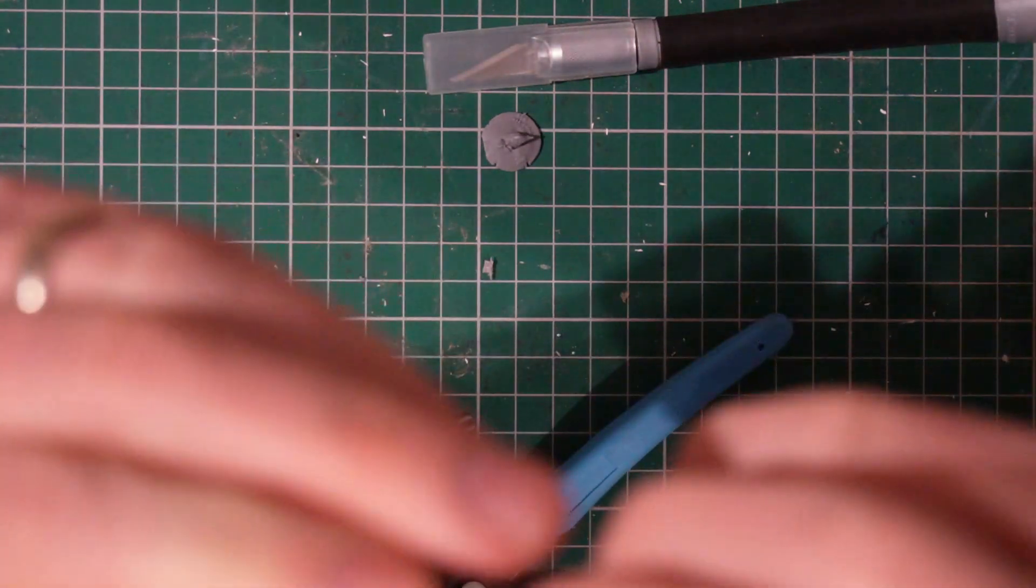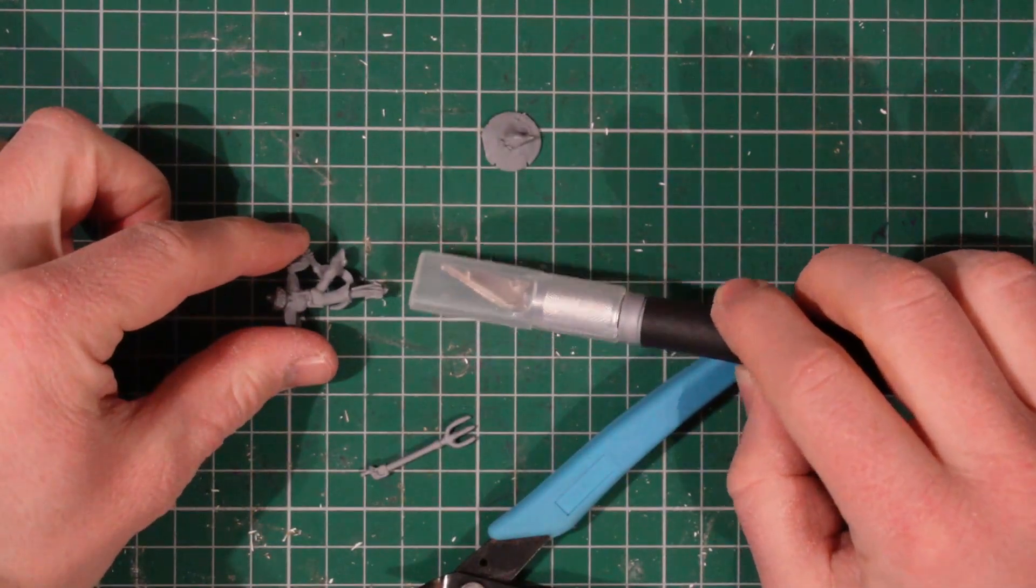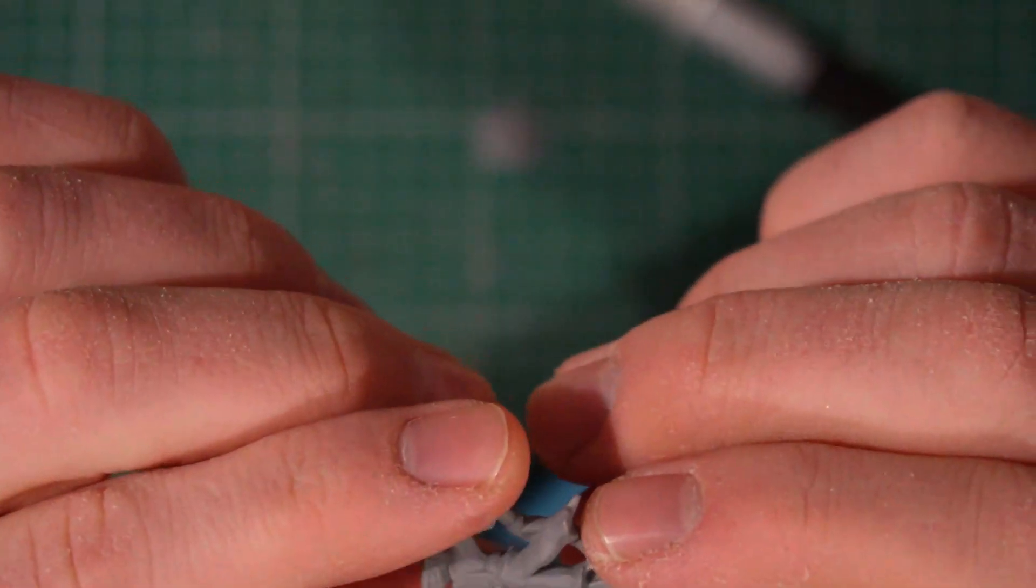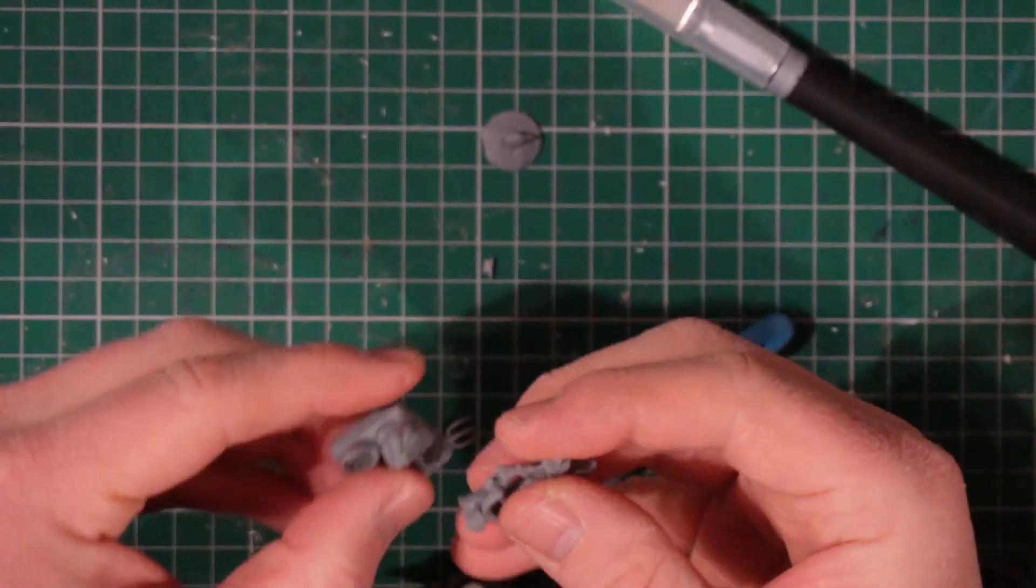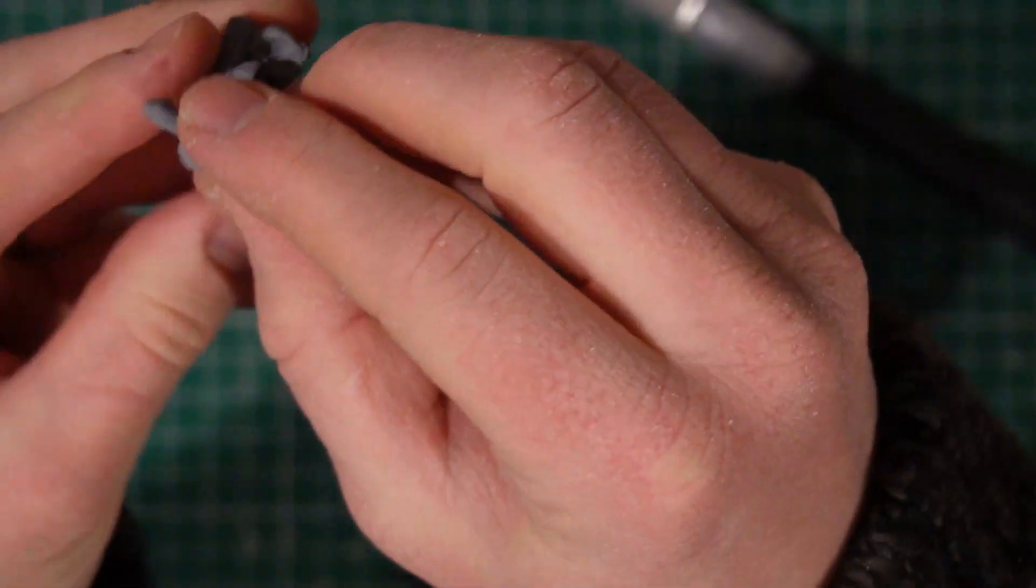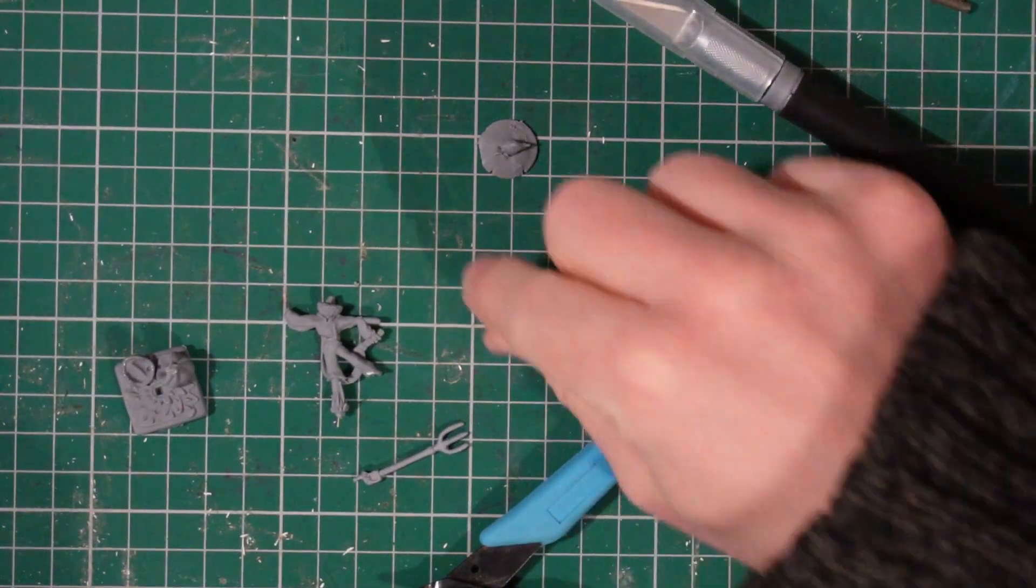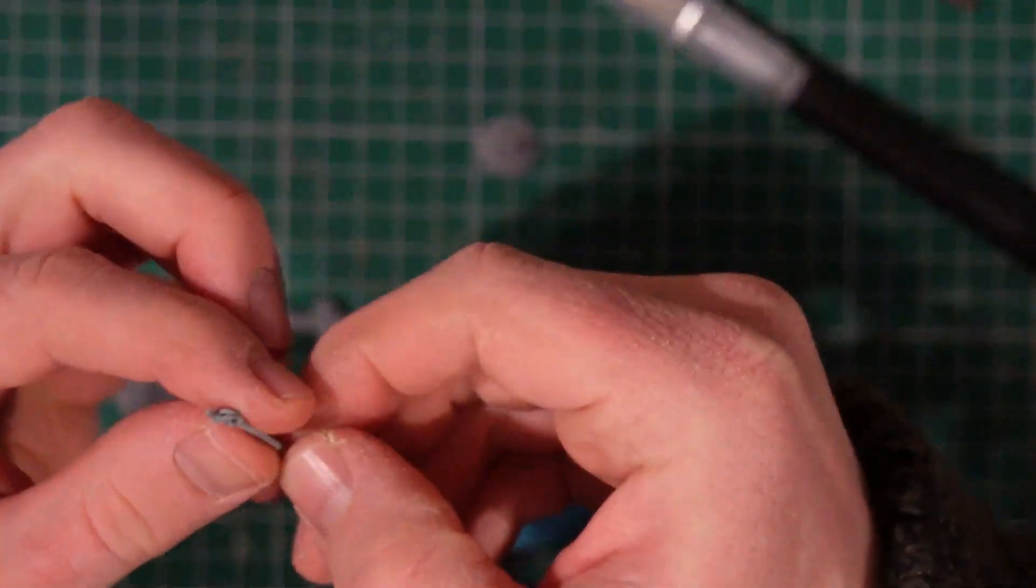There we go. Lovely. So you can see the actual peg itself is quite small. So I'm just going to do a test fit here to make sure that's actually going to plug into the square bit there. So this is something you can do as you're going along, just do little test fits to make sure that the pieces themselves will actually fit into those holes.